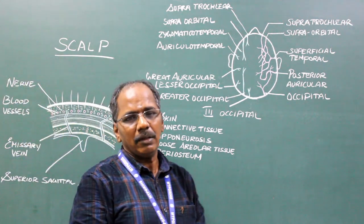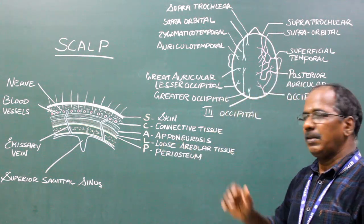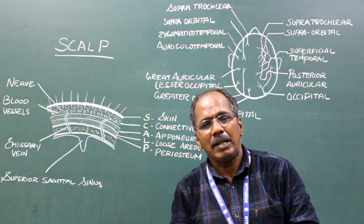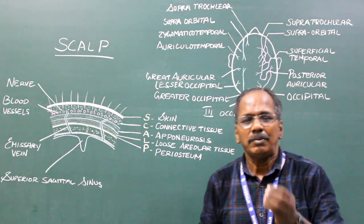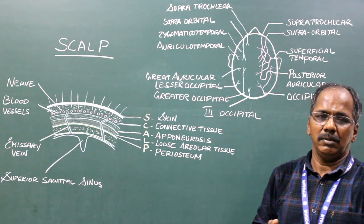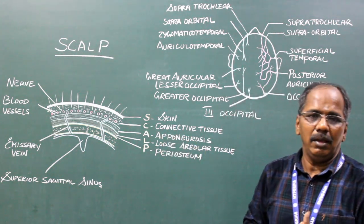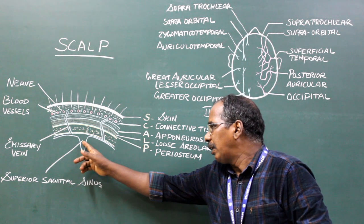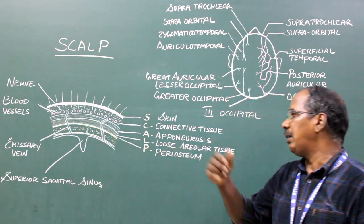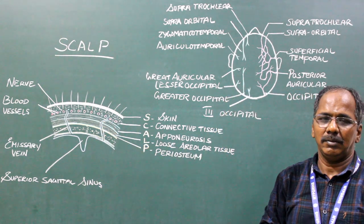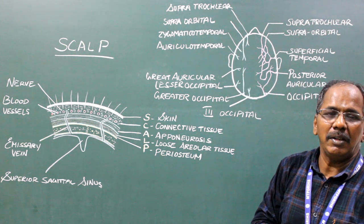Applied anatomy. Dangerous area of the scalp. The loose areolar tissue is known as the dangerous area of the scalp because blood and pus freely tend to collect in this layer. Infection from the scalp may pass to the intracranial dural venous sinuses through the emissary veins present in this layer, because it connects the superficial veins of the scalp with the intracranial dural venous sinuses.